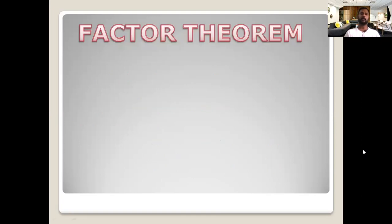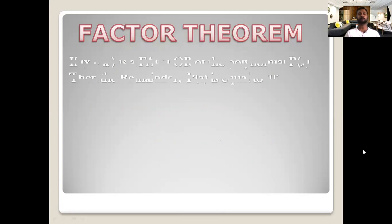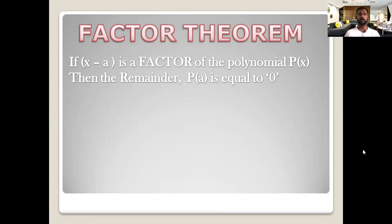The next theorem is the factor theorem. If x minus a is a factor of the polynomial p(x), then the remainder p(a) is equal to 0. Just as 5 is a factor of 15 because dividing 15 by 5 gives remainder 0, whenever the remainder is 0, that term is always a factor. We apply the same strategy to polynomials.